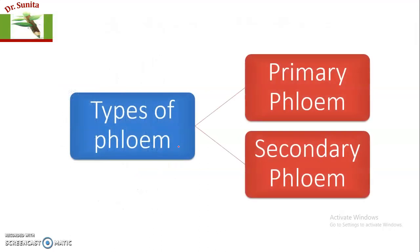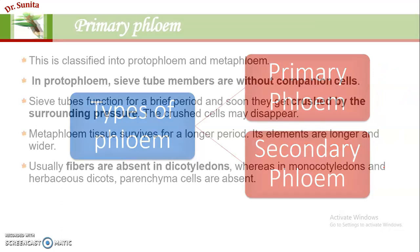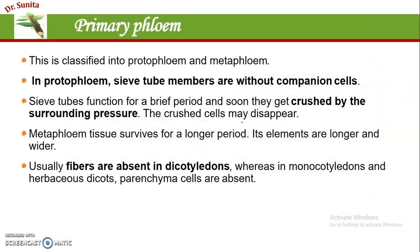On the basis of development, there are two types of phloem: primary phloem and secondary phloem. Primary phloem arises from the procambial cells, and secondary phloem arises from the vascular cambium.